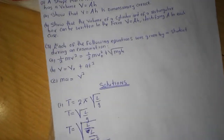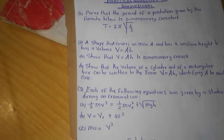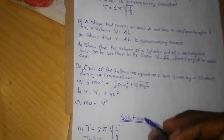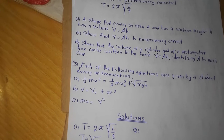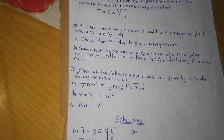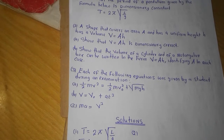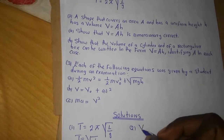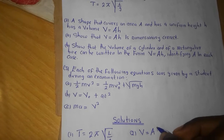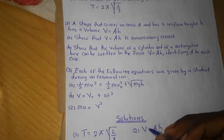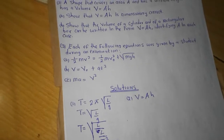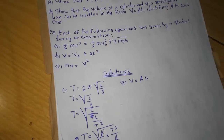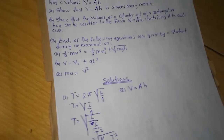You see, physics is very interesting because you are able to prove your formulas. Let me go to the second question: a shape that covers an area A has a uniform height H and has a volume V equal to A times H. Show that that formula is dimensionally correct. We know that the dimensions of V can be shown using units — as long as what you have on the left-hand side and on the right are equal, you are able to say these things are dimensionally consistent.